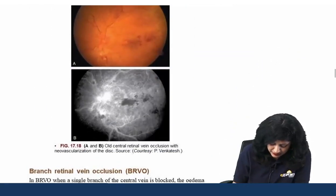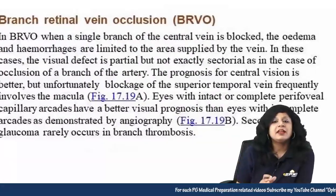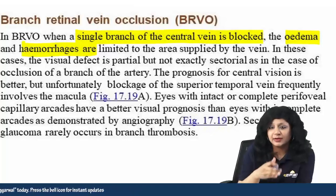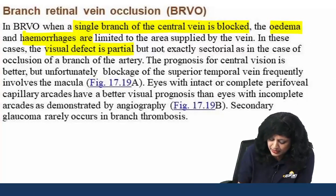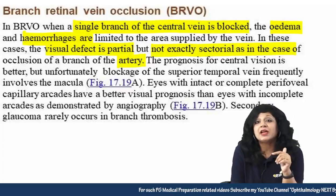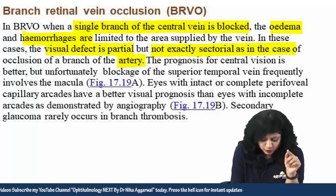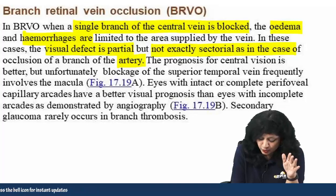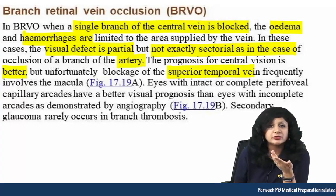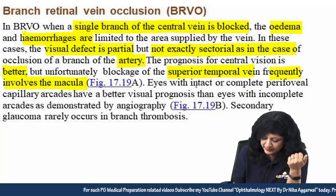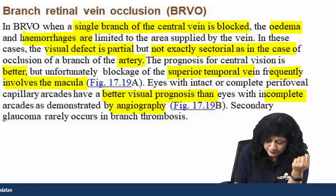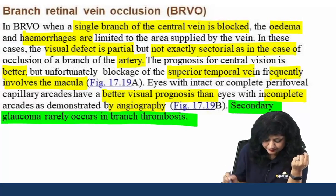In BRVO, just a single branch of the central vein is blocked. Edema and hemorrhages are limited to only the area supplied by that branch. The visual defect is partial, but not exactly sectoral as it is in arterial cases — an important difference between BRVO and BRAO. Prognosis for central vision is better, but because it is common in the supra-temporal vein and the macula lies on the temporal side, it frequently involves the macula. Eyes with intact foveal capillary arcades have a better visual prognosis than those with incomplete arcades, assessable by angiography. Secondary glaucoma can also occur.